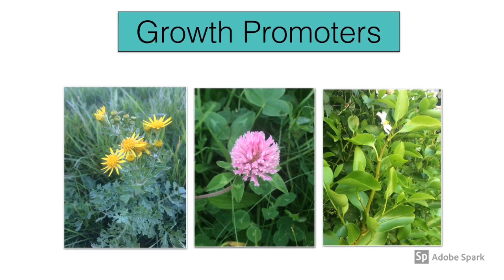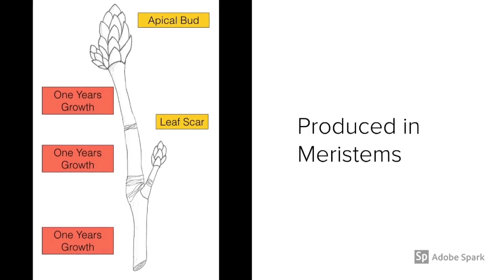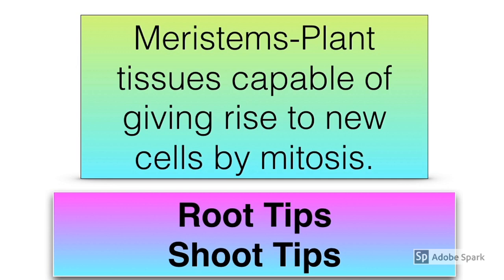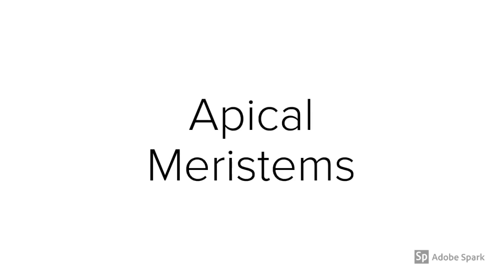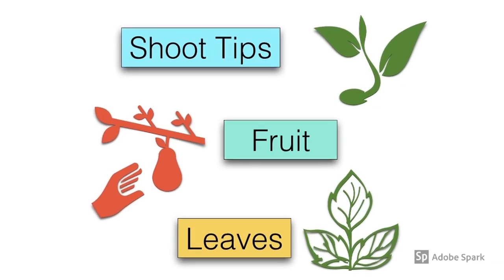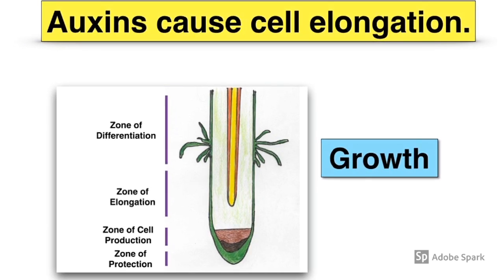Growth promoters cause cell elongation, so they stimulate growth. For example, auxins — that family of growth regulators — would be considered growth promoters. Auxins are produced in meristems, which are plant tissues capable of giving rise to new cells by mitosis. You would generally find meristems at the root tips and the shoot tips, known as the apical meristems. Auxins are also produced in developing fruit and in young leaves. Make sure you can identify where auxins are produced in a diagram of a root — they are produced in that zone of cell production.